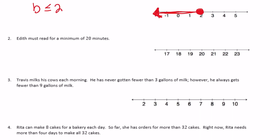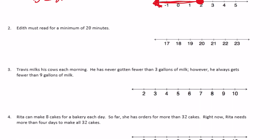Number 2: Edith must read for a minimum of 20 minutes. She could read more than 20 minutes but can't read less. So Edith must read for 20 minutes or more. I find 20 minutes on the number line and color it in because she could read exactly 20 minutes, then draw the arrow pointing right.